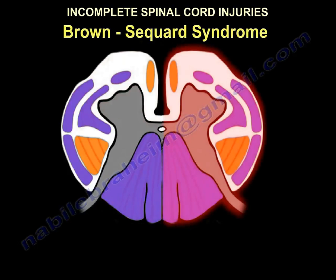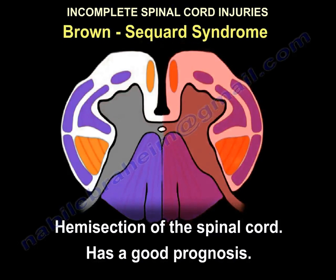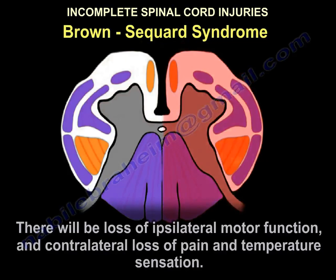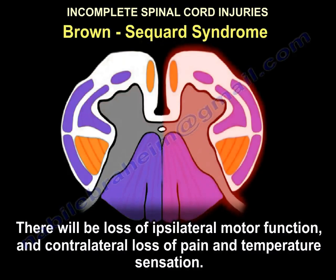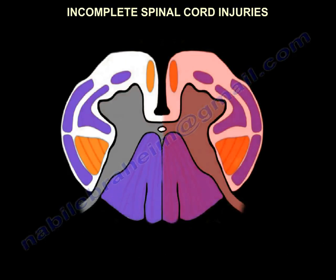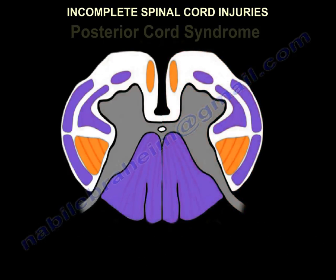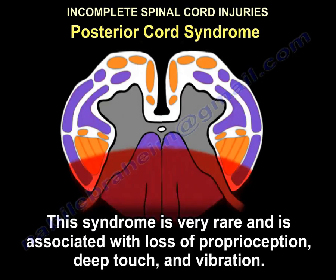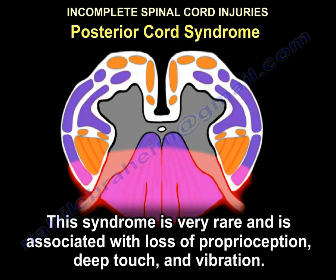Brown-Séquard syndrome is hemisection of the spinal cord and carries a good prognosis. It involves loss of ipsilateral motor function and contralateral loss of pain and temperature sensation. Posterior cord syndrome is rare and is associated with loss of proprioception, deep touch, and vibration.